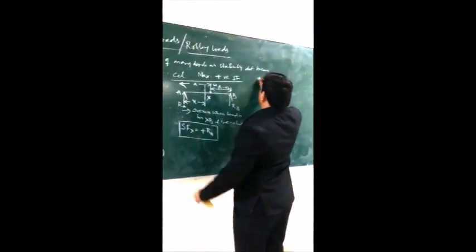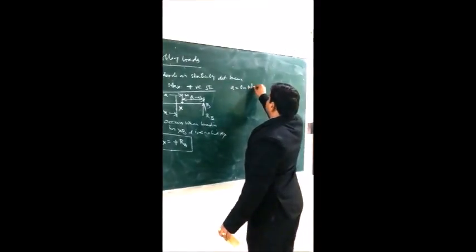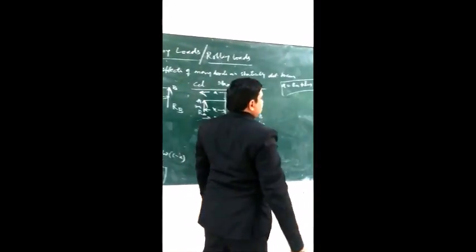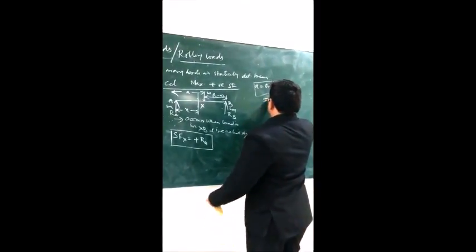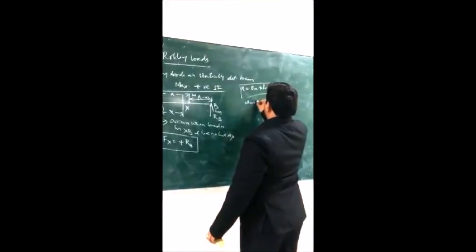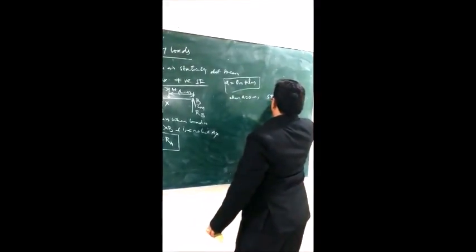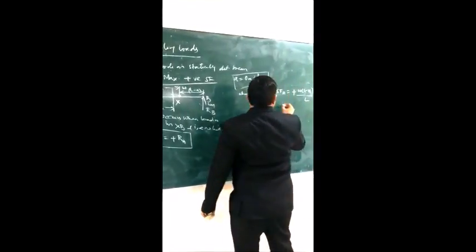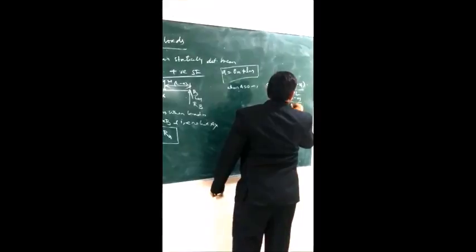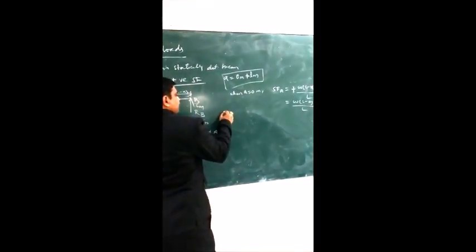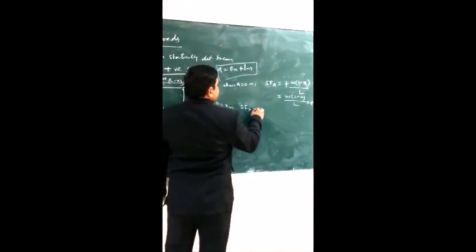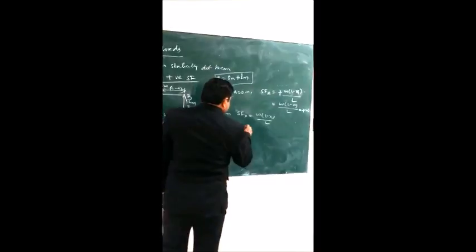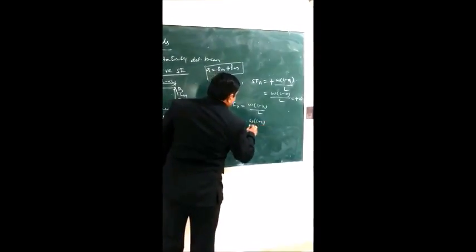The load 'a' varies from 0 meters to L meters as it moves across the beam. When a = 0, shear force = W(L − 0)/L = W. When a = x, shear force = W(L − x)/L. When a = x meters, the shear force equals W(L − L)/L = 0.